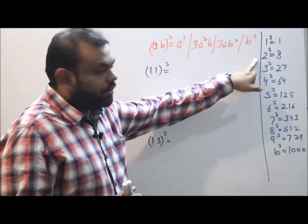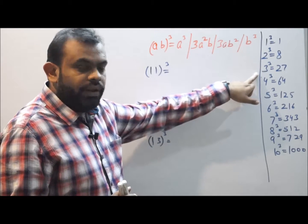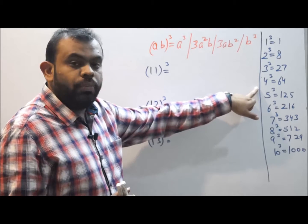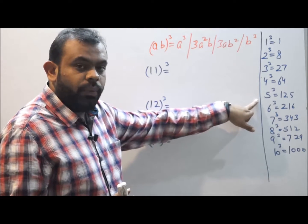The cube of 2 is 8, cube of 3 is 27, 4 cube is 64, 5 cube is 125.